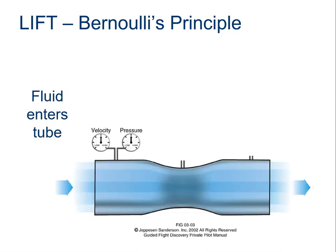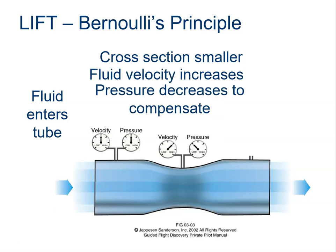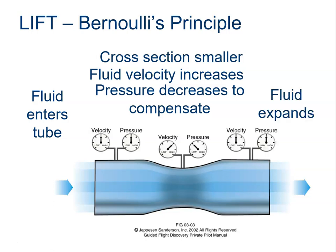If we look at a venturi tube, fluid enters on the left with a certain velocity and pressure. When it enters a smaller cross-section, the velocity increases and the pressure goes down. Then when it expands back out, pressure and velocity return to their original state. This is essentially how a wind tunnel operates — the test section is in the middle where the flow is squeezed slightly.